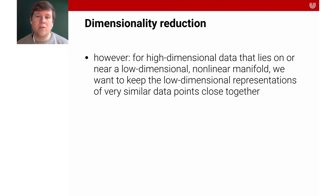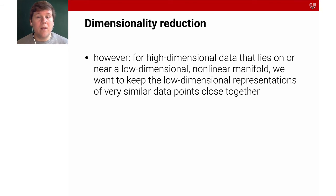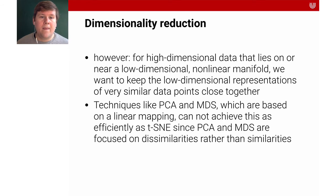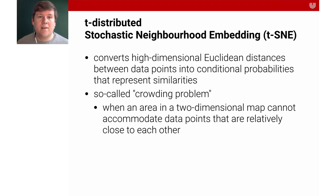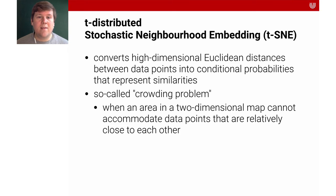However, research showed that for high-dimensional data that lies on or near a low-dimensional non-linear manifold, we want to keep the low-dimensional representations of very similar data points close together. Techniques like PCA or multidimensional scaling, which are based on a linear mapping, cannot achieve this as efficiently as t-SNE — t-distributed stochastic neighborhood embeddings — because PCA and MDS are focused on dissimilarities rather than similarities. T-SNE converts high-dimensional Euclidean distances between data points into conditional probabilities that represent similarities.